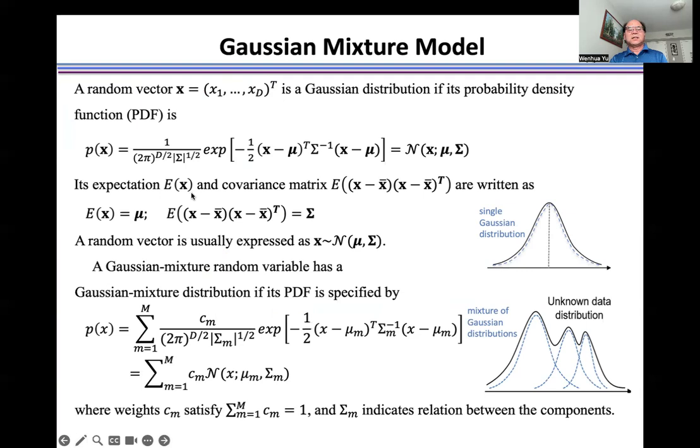Its expectation E(x) and covariance matrix Σ((x - E)(xᵀ - Eᵀ)) are written as these two formulations. A random vector is usually expressed as this formulation.